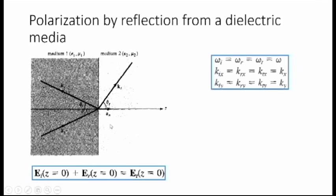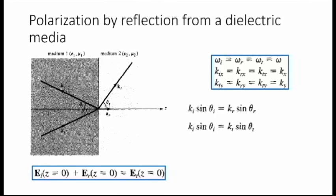If you plug z equals zero into the three equations of these fields, you would get these conditions. The first condition says that the frequencies of the three waves are the same — which is kind of obvious. We are actually proving this mathematically. The second condition says that the x components of the propagation constant are the same for the three waves. And the third condition says that the y components of the propagation constants are the same.